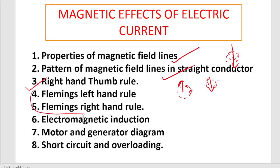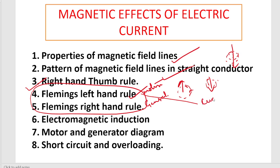Next, very important: Fleming's Left Hand Rule and Fleming's Right Hand Rule. Fleming's Left Hand Rule is also called the motor rule; Fleming's Right Hand Rule is also called the generator rule. For both rules, we use the thumb finger, forefinger, and middle finger. The thumb finger indicates the motion of the conductor, the forefinger indicates the magnetic field, but the middle finger - in one it indicates current and in the other it indicates induced current.